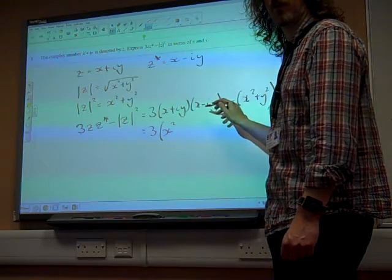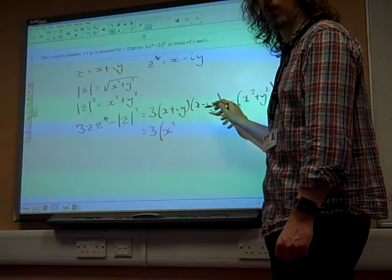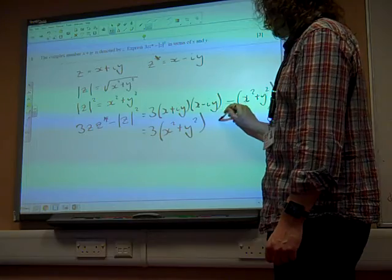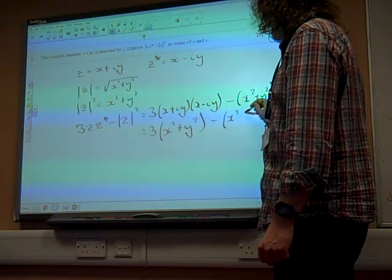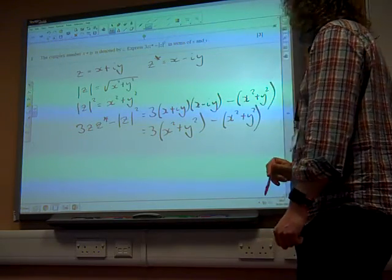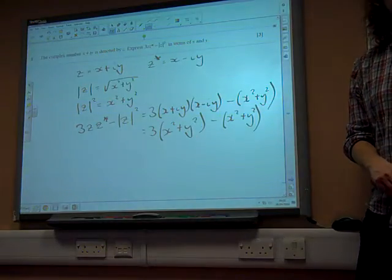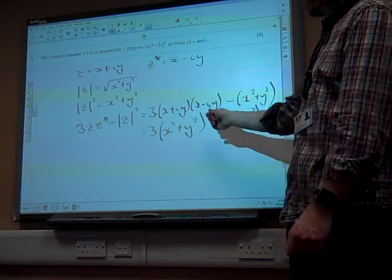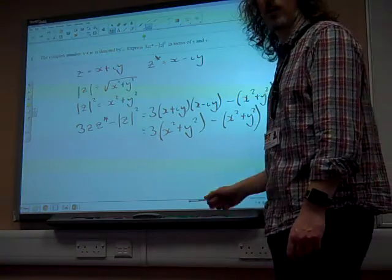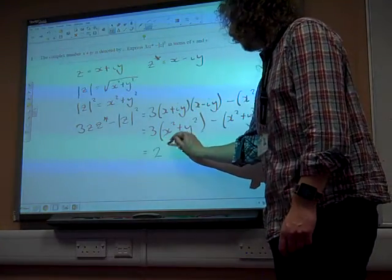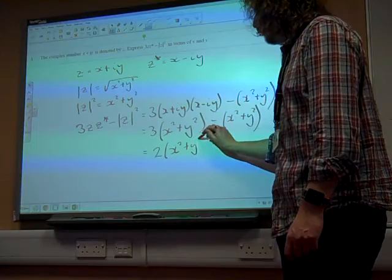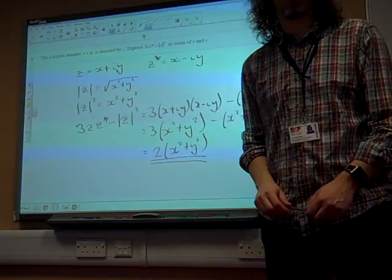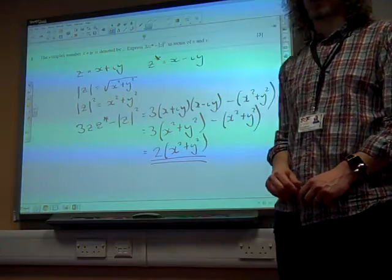And because I squared is minus 1, minus minus that gives us plus Y squared. Then we've got to take away X squared plus Y squared. And you could multiply it out if you really want to, but actually already it's kind of obvious that we've got three lots of X squared plus Y squared, take away one lot of X squared plus Y squared. So we've got two lots of X squared plus Y squared as our answer to that one, and that's maths.